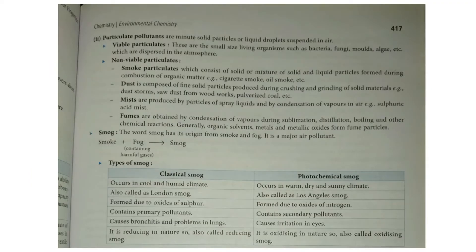Particulate pollutants can be visible or non-visible. Living particulate pollutants include fungi, bacteria, mold, and algae. Non-living particulate pollutants include smoke particles. Smoke particles are smaller in size than dust particles.